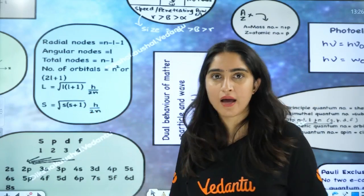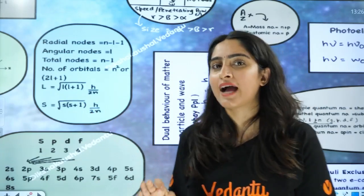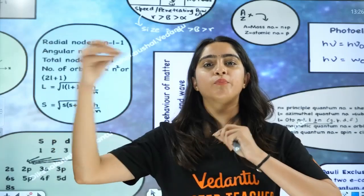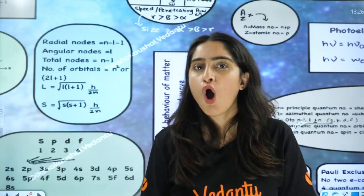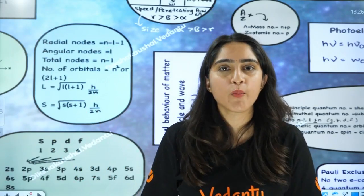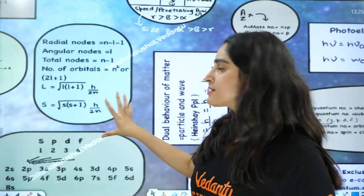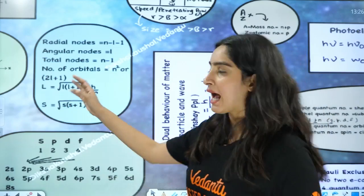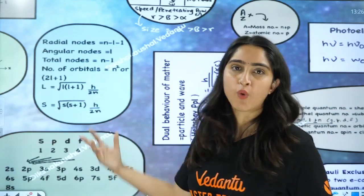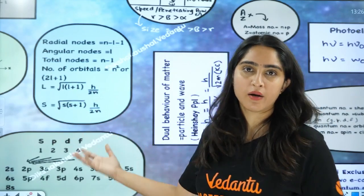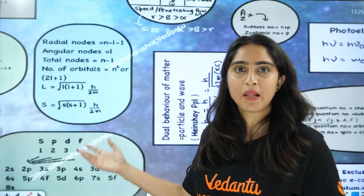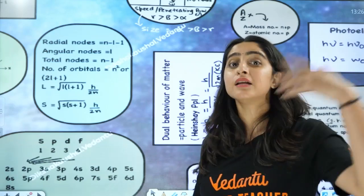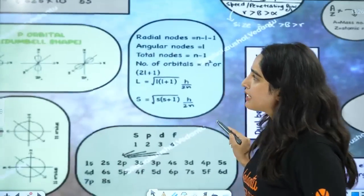The Bohr model has a different formula for calculating momentum compared to quantum mechanics. This is orbital angular momentum, and this is spin angular momentum — they have different formulas from the Bohr model.